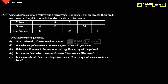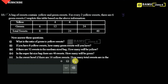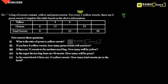Hello viewers, in this module we are going to discuss: a bag of sweets contains yellow and green sweets. For every two yellow sweets there are six green sweets — complete the table based on this information. So for every yellow sweets, let's take this: yellow sweets 2, green sweets — if you take yellow sweets 2 there are 6 green sweets. 2 ones are 2, 3 ones are 3 — then 1 is to 3. If one yellow sweet is there, three green sweets are there. What is the ratio of green to yellow sweets? That is 1 is to 3. That is the value.